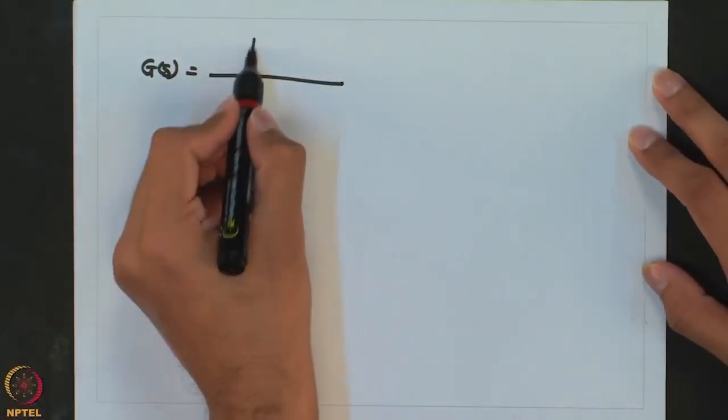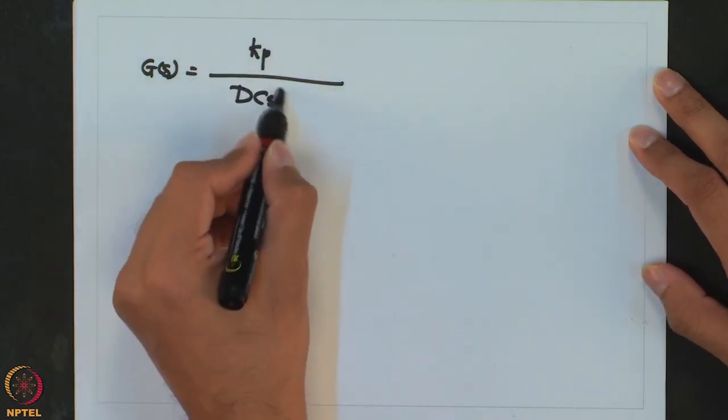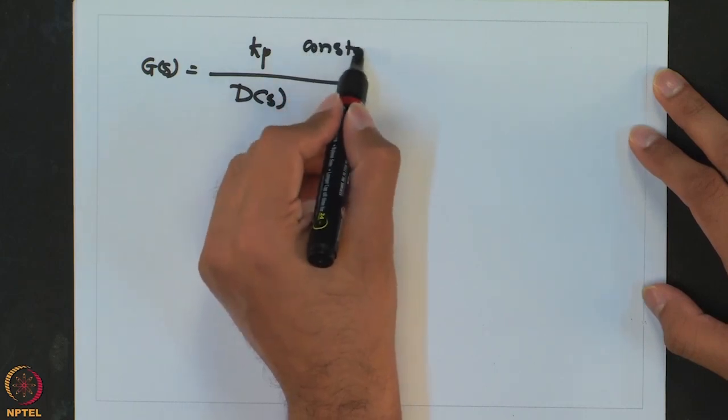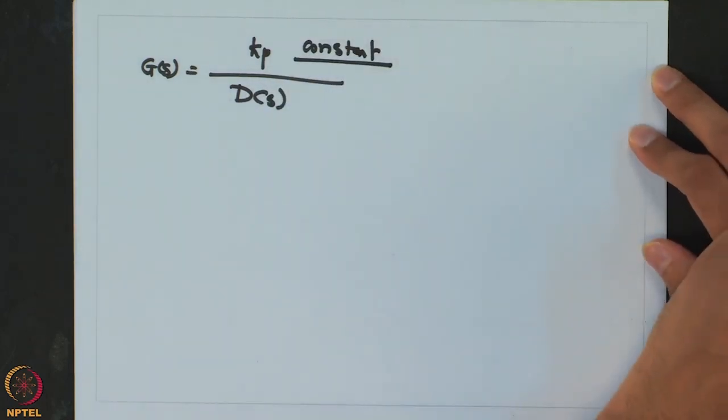So let us get started. So far we have looked at different examples of dynamical systems. We started with first order processes, second order processes, and then extended to higher order processes. In all those examples, the effect came from the denominator. Whatever transfer function we considered had some constant in the numerator and some polynomial in S in the denominator.